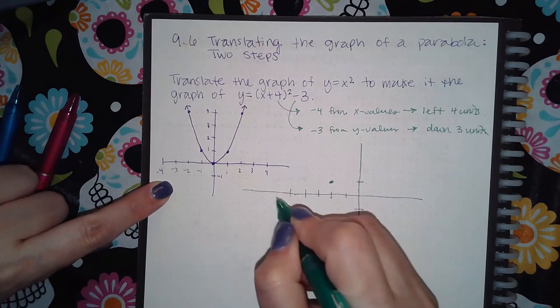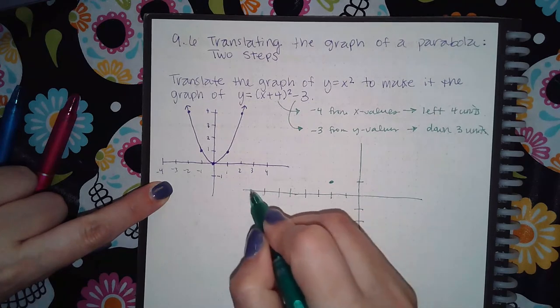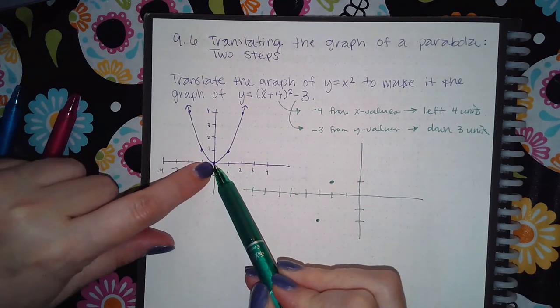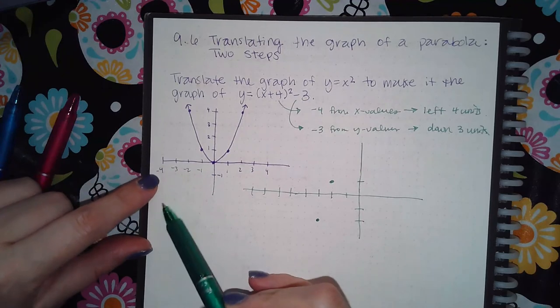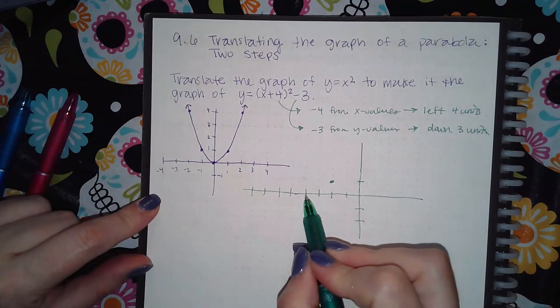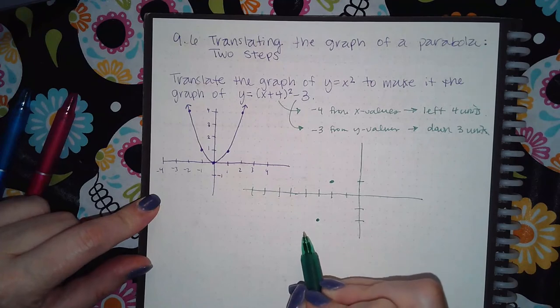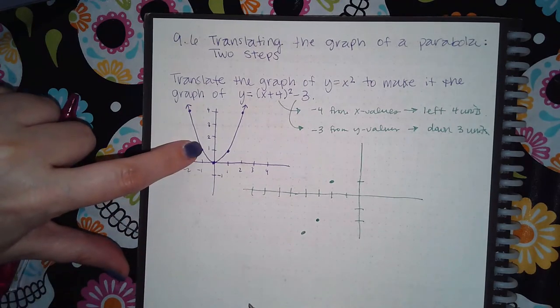Now I'm going to take zero, zero and move it to the left 1, 2, 3, 4 and down 1, 2, 3, so I'm at negative 4 and 1, 2, 3. Then the next point, move it to the left which puts me at negative 5.